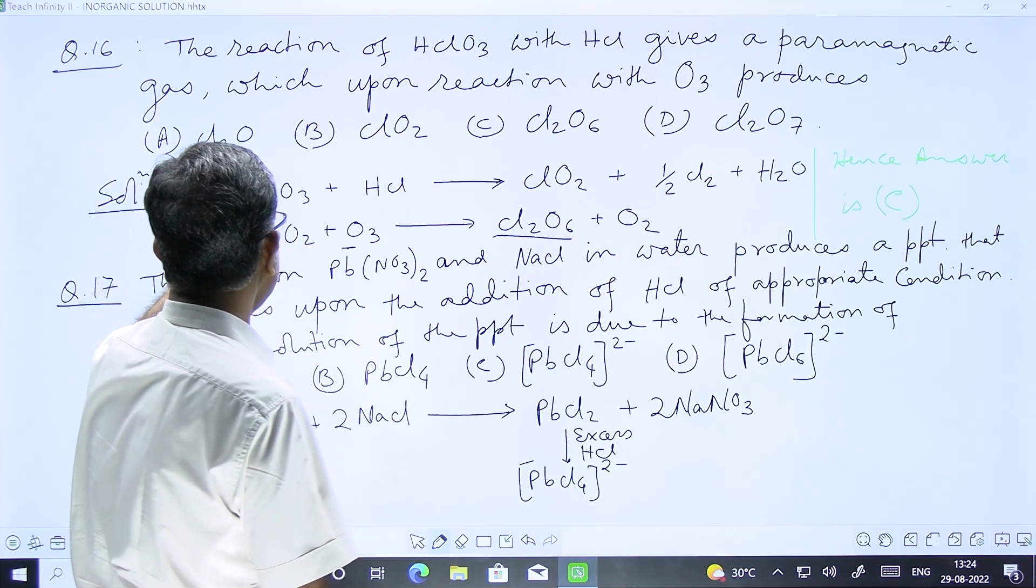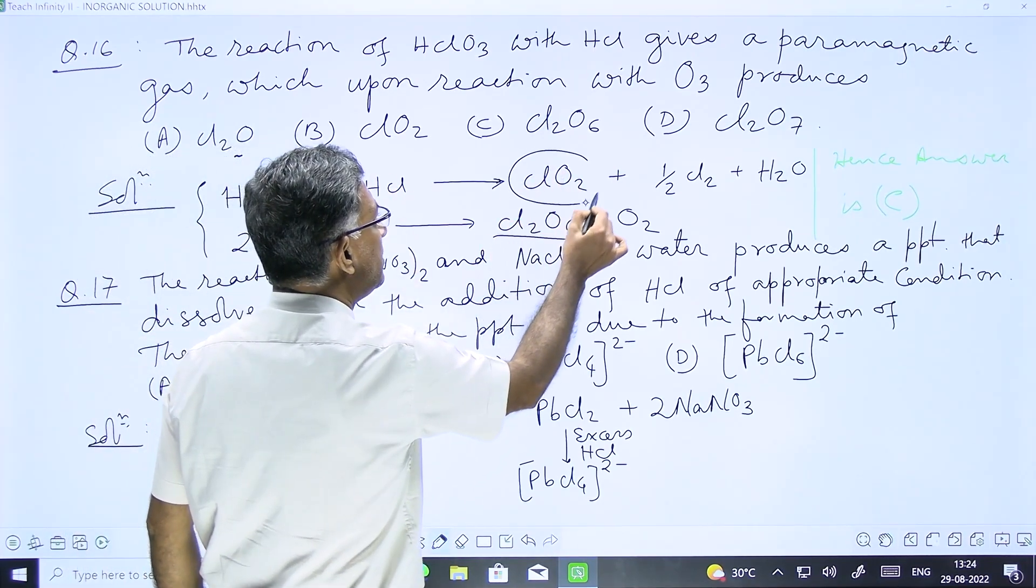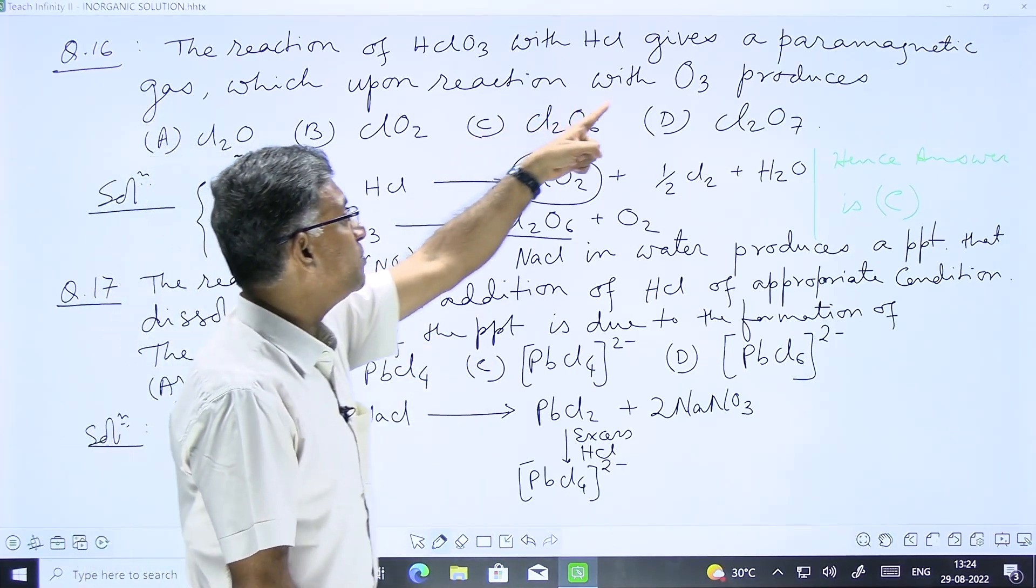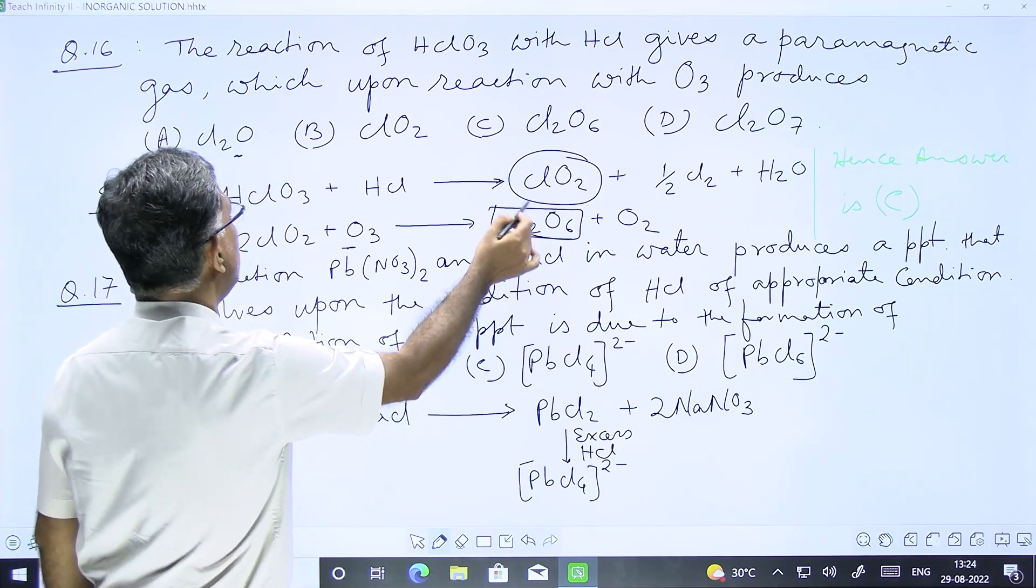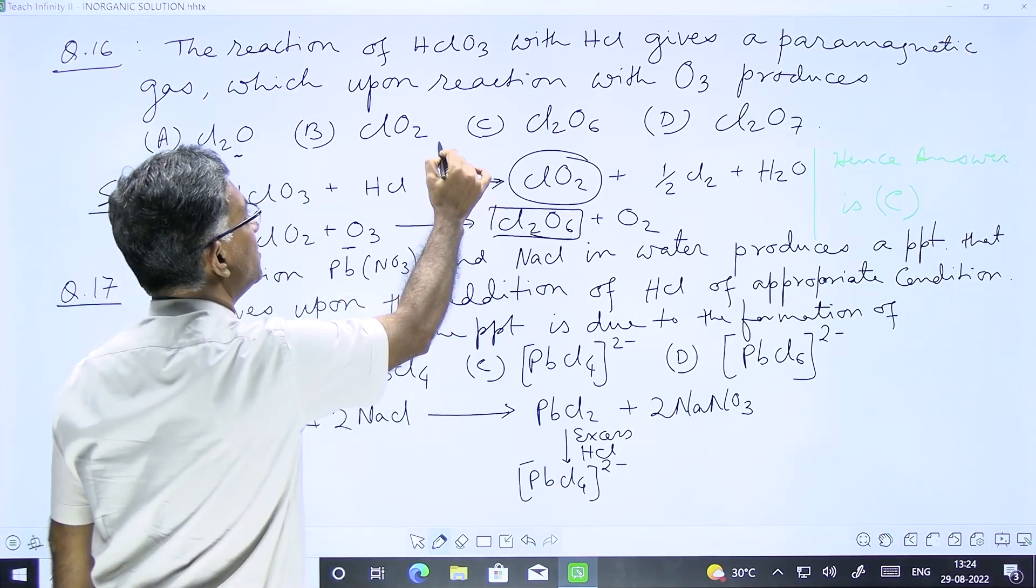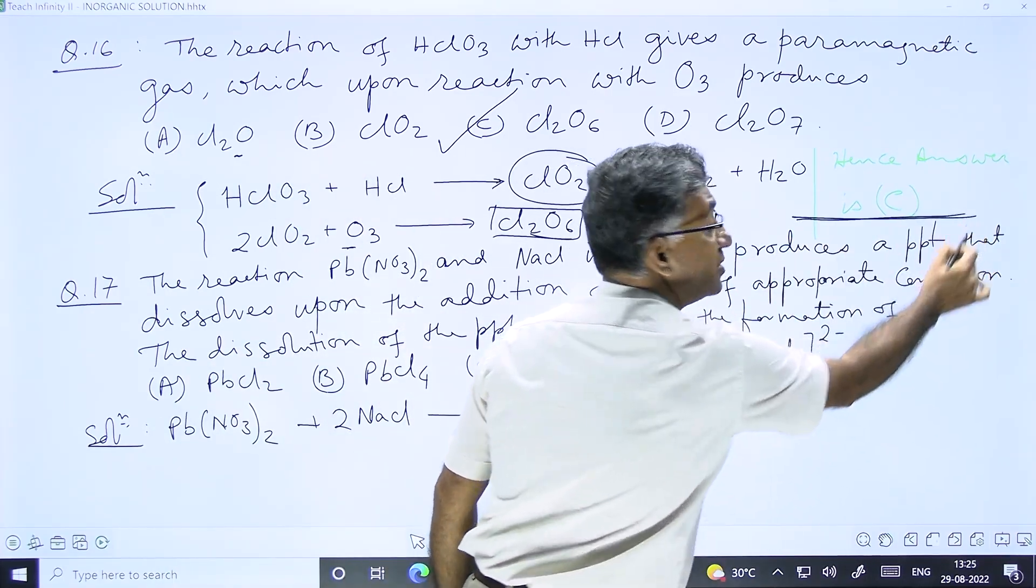Over here, HClO3 and HCl produces a paramagnetic gas which is nothing but ClO2. And ClO2 reacts with O3 to give you Cl2O6 as a product, and that is given in the option. Accordingly, option C is the correct answer.